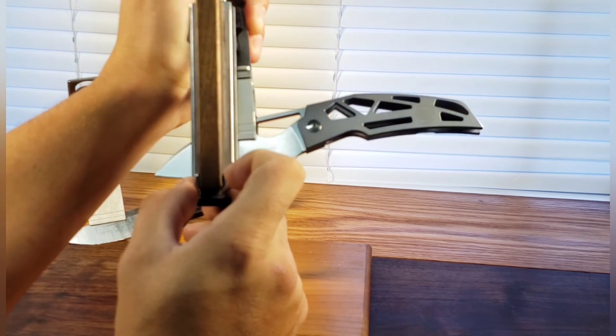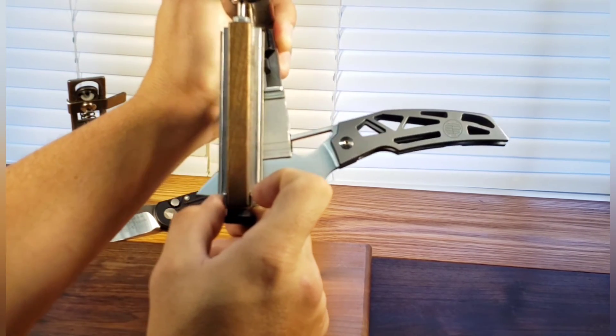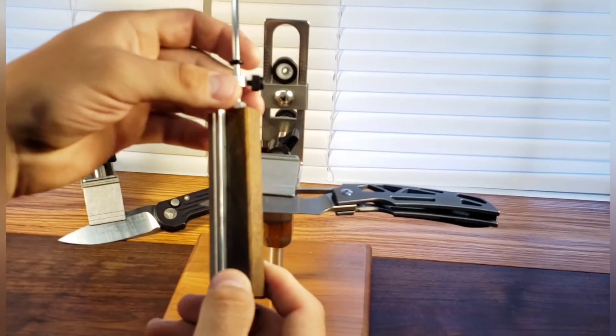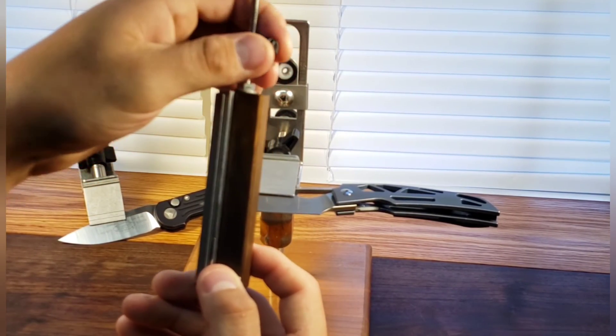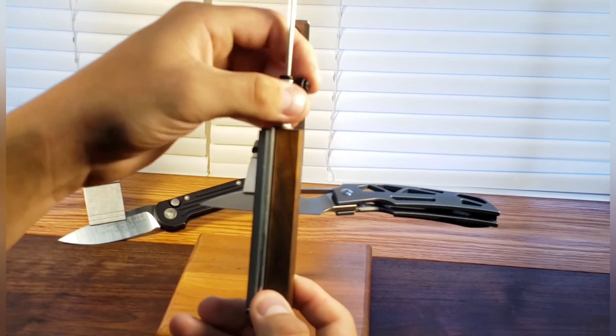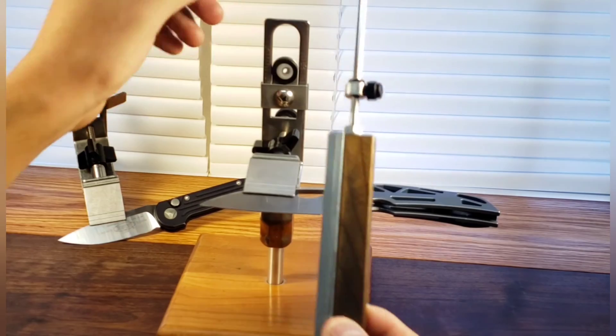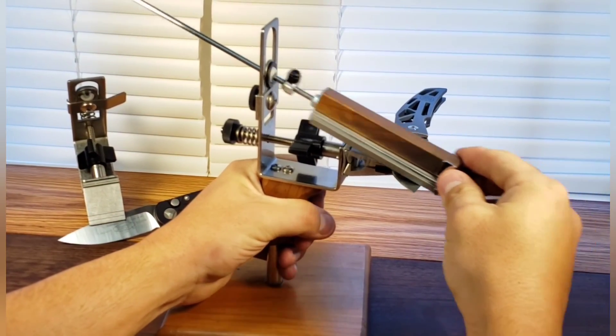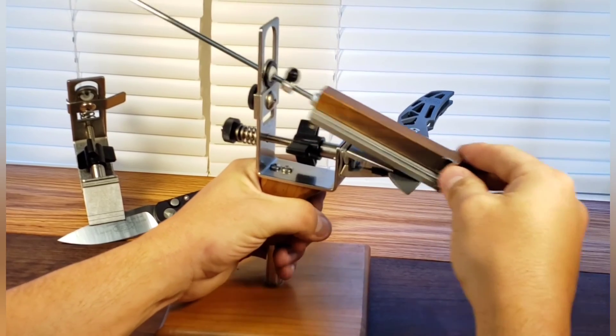So you'll take your stop collar, butt it up next to that o-ring and you'll lock it down. Snug it up and now you're set up and ready to go so that if you're sharpening there's no way that you can slide up onto the side of that knife and scratch it up.